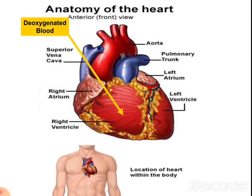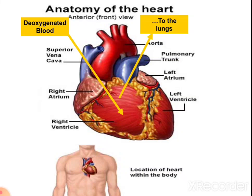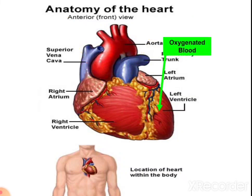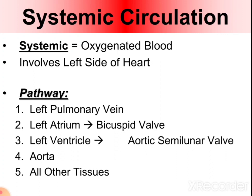Deoxygenated blood from the whole body reaches the right atrium, then enters the right ventricle, from which it is pumped into the pulmonary trunk transferring deoxygenated blood to the lungs. In the lungs, purification occurs and oxygenated blood is transferred to the pulmonary veins, then to the left atrium, then to the left ventricle, and from there it reaches the rest of the body via the aorta. This is the systemic circulation, in which oxygenated blood is circulated to different systems of the body involving the left side of the heart.